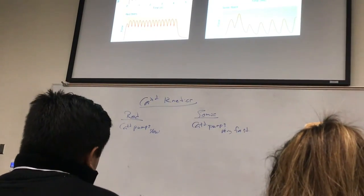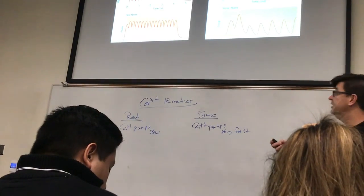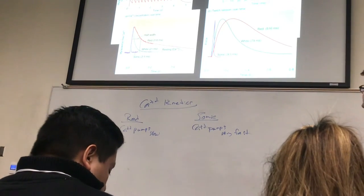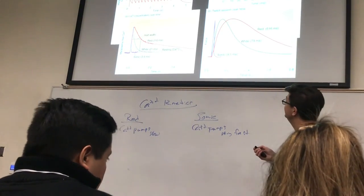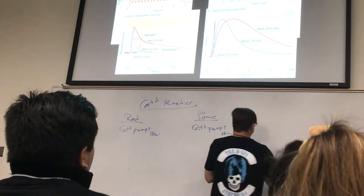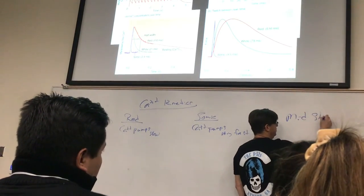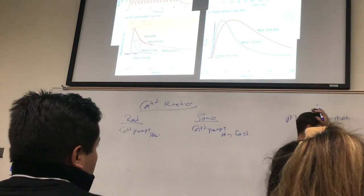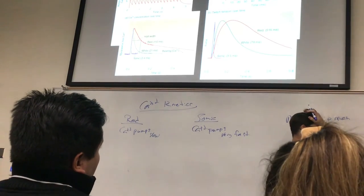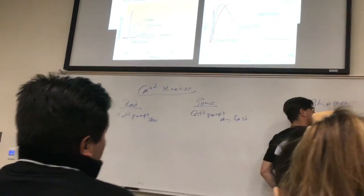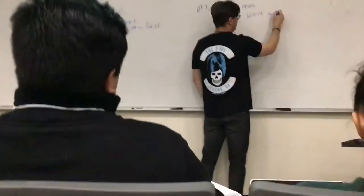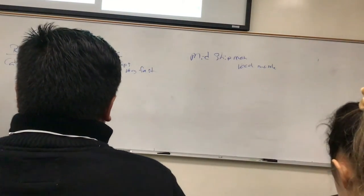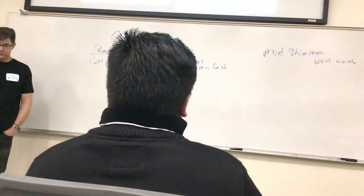Another muscle that contracts at an extremely high frequency is found in the midshipman fish, known as midshipman vocal fish. These midshipman fish are pretty weird — they have two types: a type 1 male and a type 2 male.